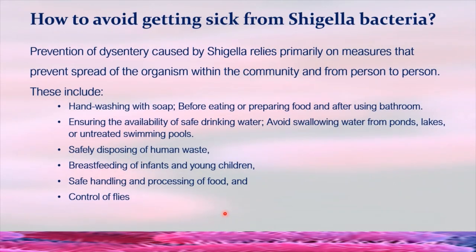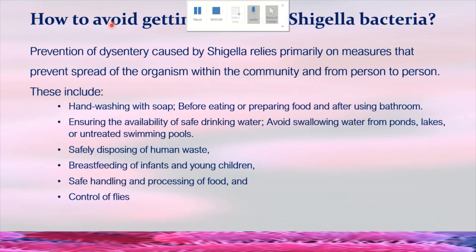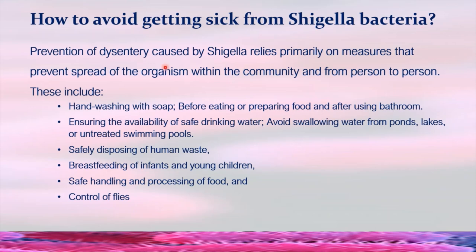Now that you know what bacteria causes Shigellosis and how it affects the human body, let's look at how to avoid getting sick from Shigella. Prevention of dysentery caused by Shigella relies primarily on measures that prevent the spread of the organism within the community and from person to person. Number one: hand washing with soap before eating or preparing food, and after using the bathroom — always wash your hands with soap.